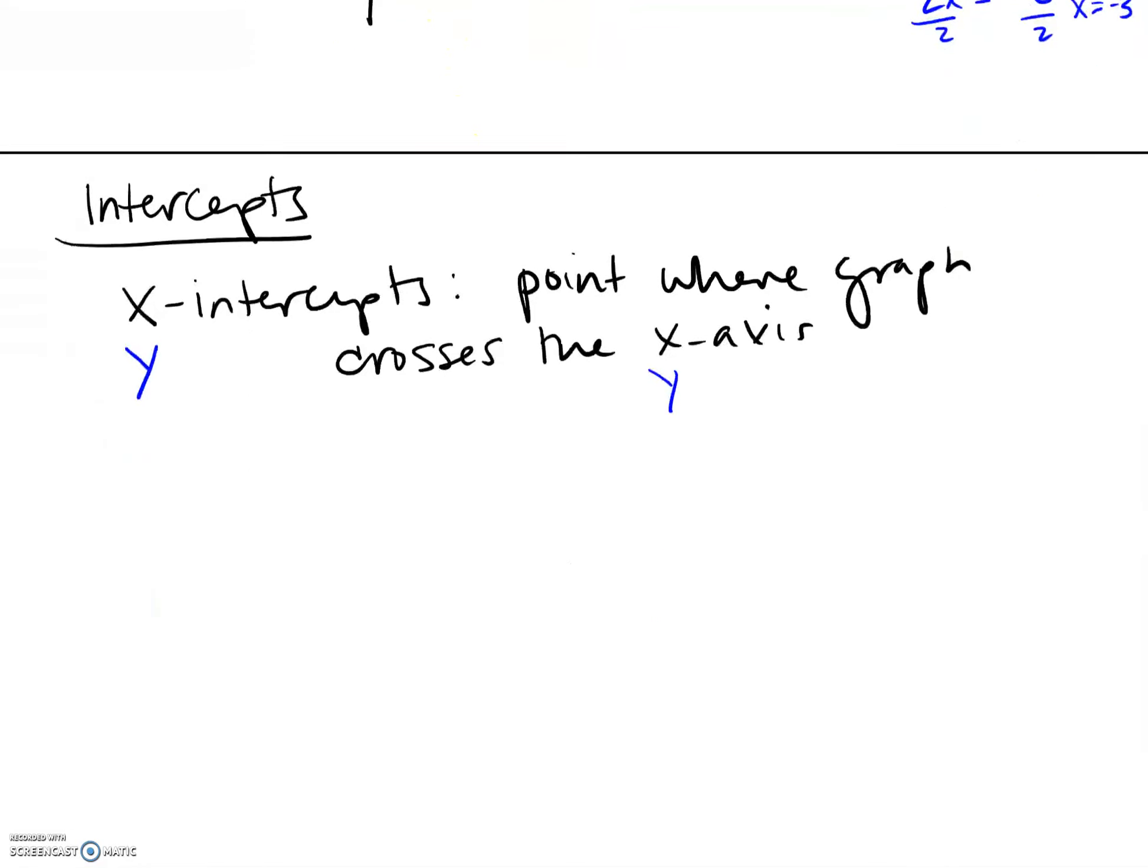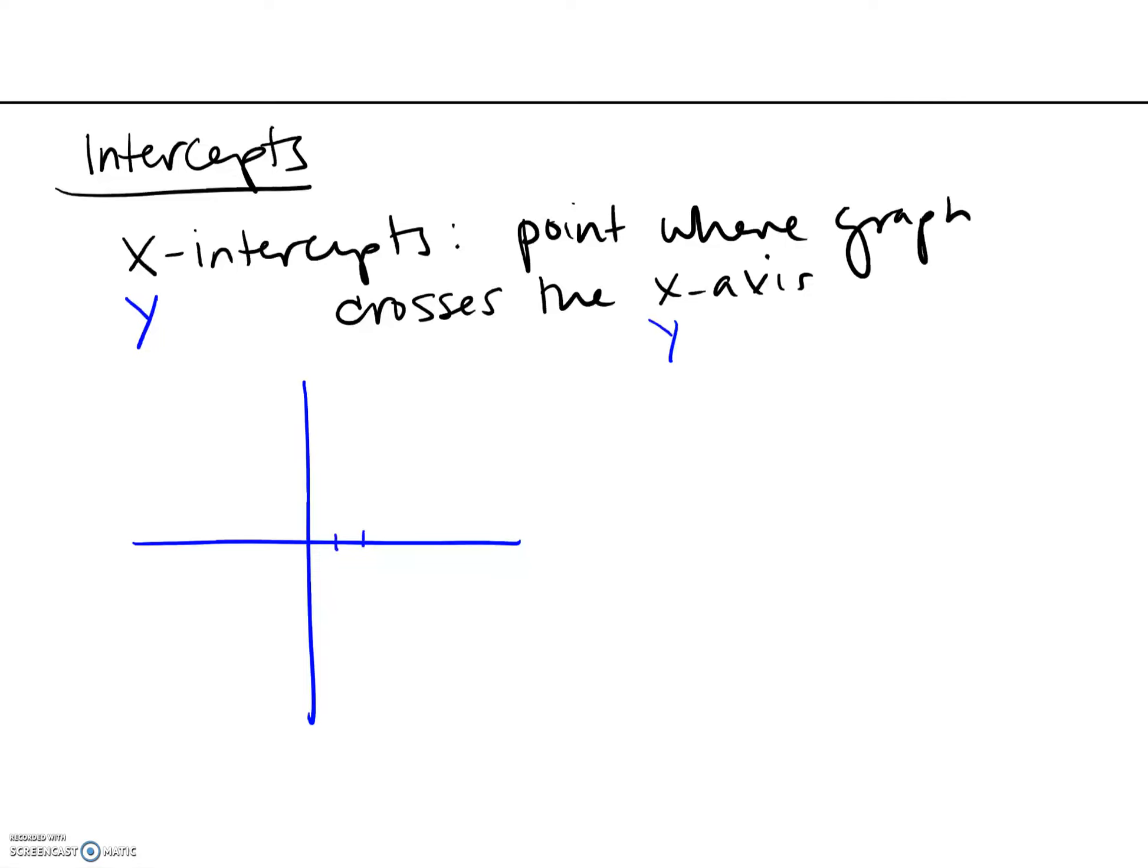So let me redraw a little less terribly that graph from before, a little more large. So here was our beautiful thing. We crossed at those two points. We had zero, two and three, zero.